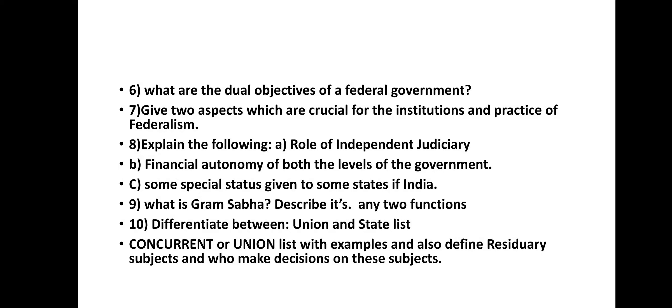Explain the following: the role of an independent judiciary — we have already discussed this. The judiciary plays a very important role as an organ of the country. Also explain financial autonomy of both levels of government — financial autonomy means the jurisdiction in financial matters, how both the Union government and the State government generate their income.